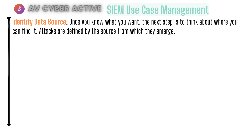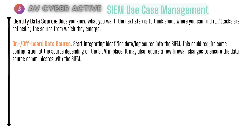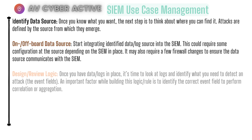Next in the lifecycle is to onboard or offboard your data source. This is the start stage where you begin integration of log sources into your SIEM. This could require some config changes at the source, like forwarding of logs to the SIEM. It may also require changes to your firewall rules to ensure data sources communicate with your SIEM — for example, opening port 514 with UDP protocol so your SIEM connector, receiver, or load balancer can receive those logs.